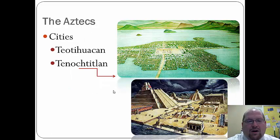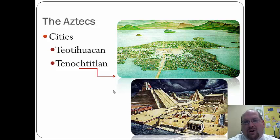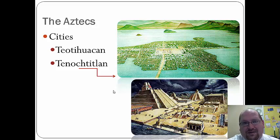The two main cities are Tlatelolco and Tenochtitlan. Tlatelolco was used primarily as the government and residential city, while Tenochtitlan served as a trade center where people went to exchange goods.